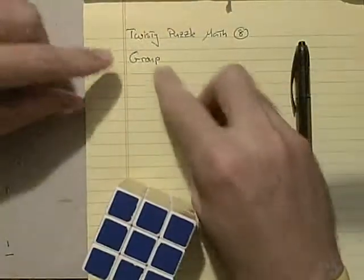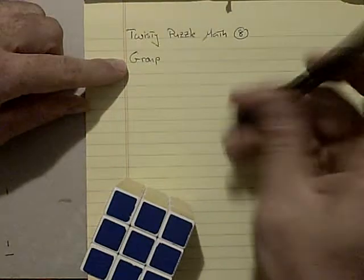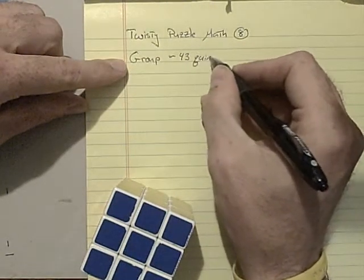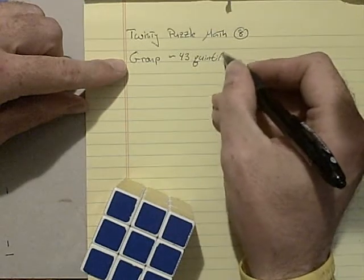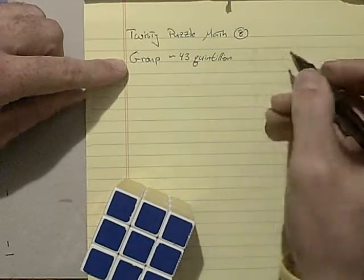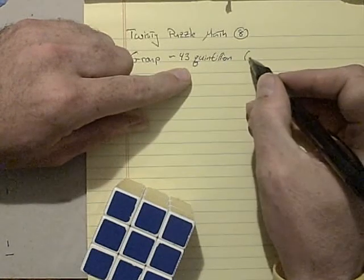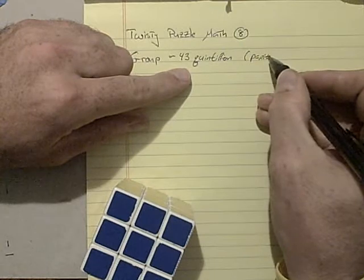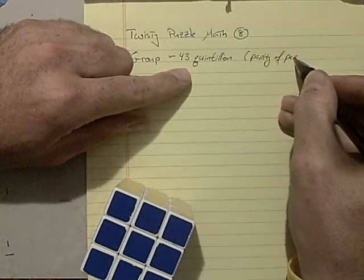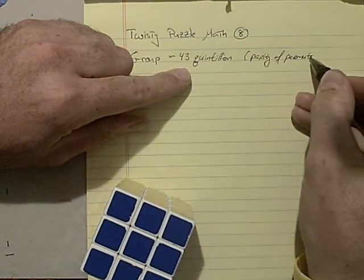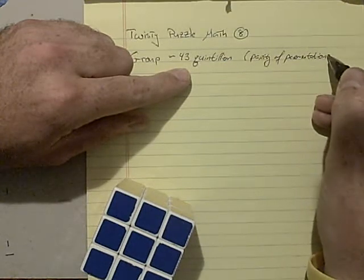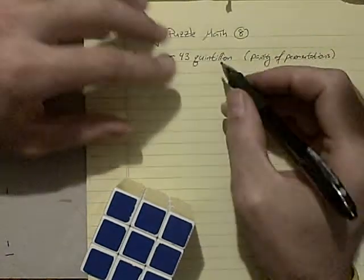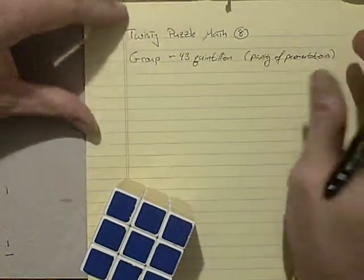So how many things are in the cube group? Well, it turns out, and we will calculate this in a later video, there are 43 quintillion. The proof involves some things about the parity of permutations, even odd permutations, these sorts of things that want to take some time to do. We will get to that calculation, but this is a ridiculously large number.